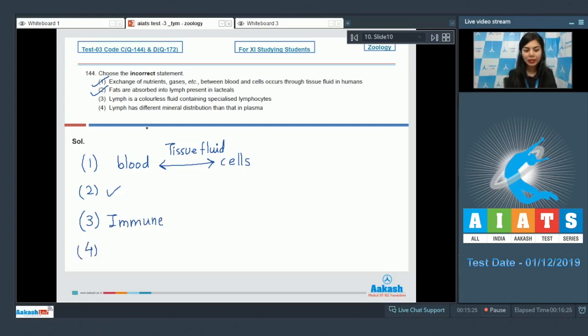Option number 4: Lymph has different mineral distribution than that in plasma. That is incorrect. The tissue fluid and plasma both have similar mineral distribution. So this is incorrect. The correct answer here would be option number 4 because that is our incorrect statement.